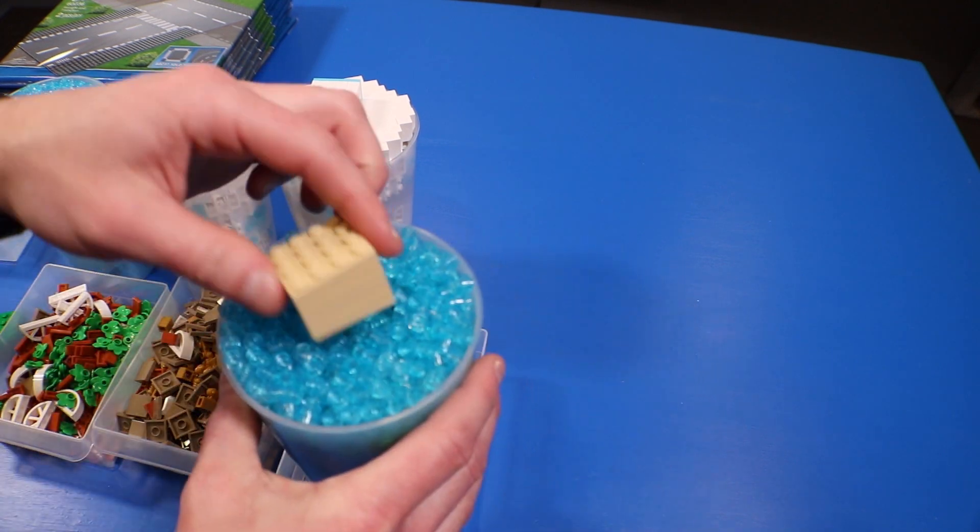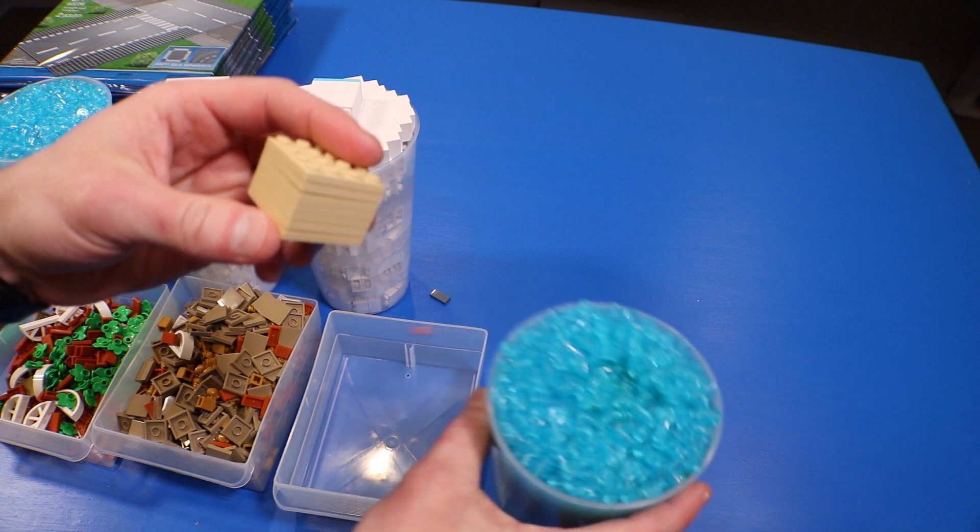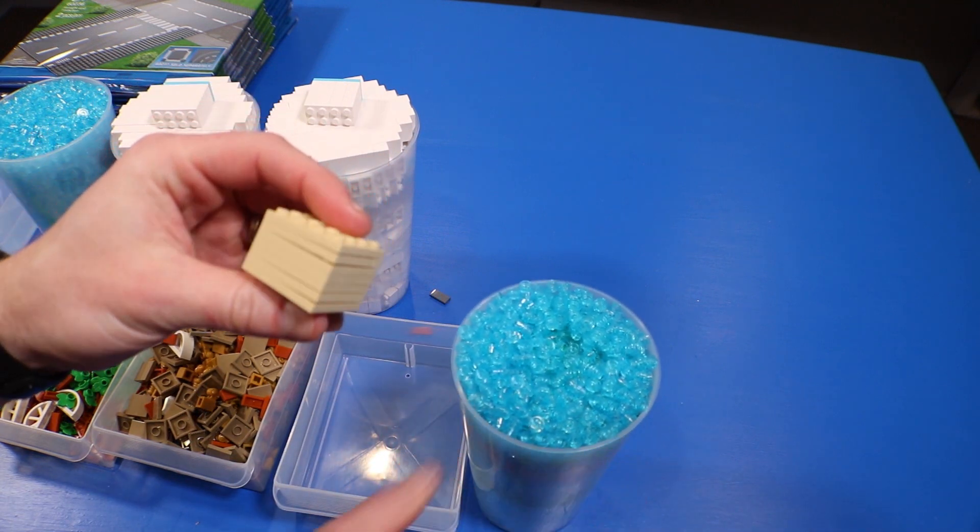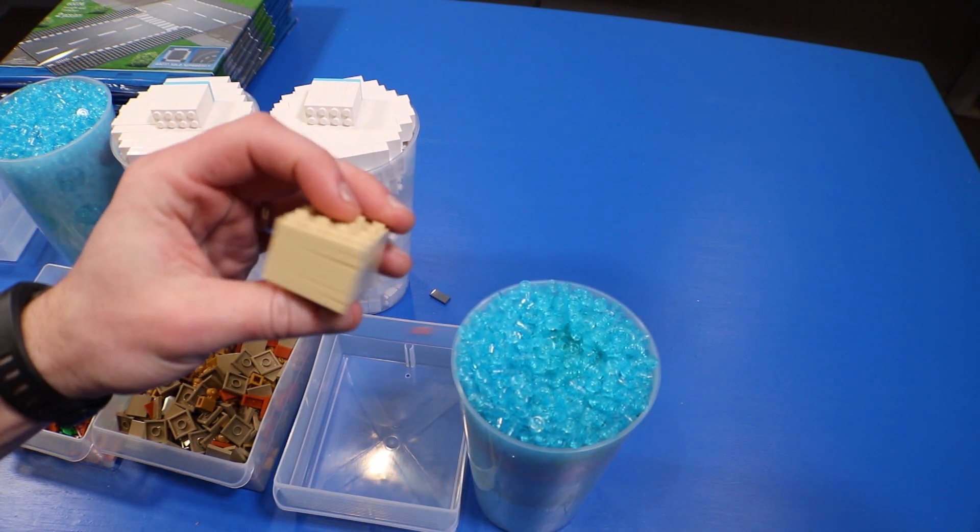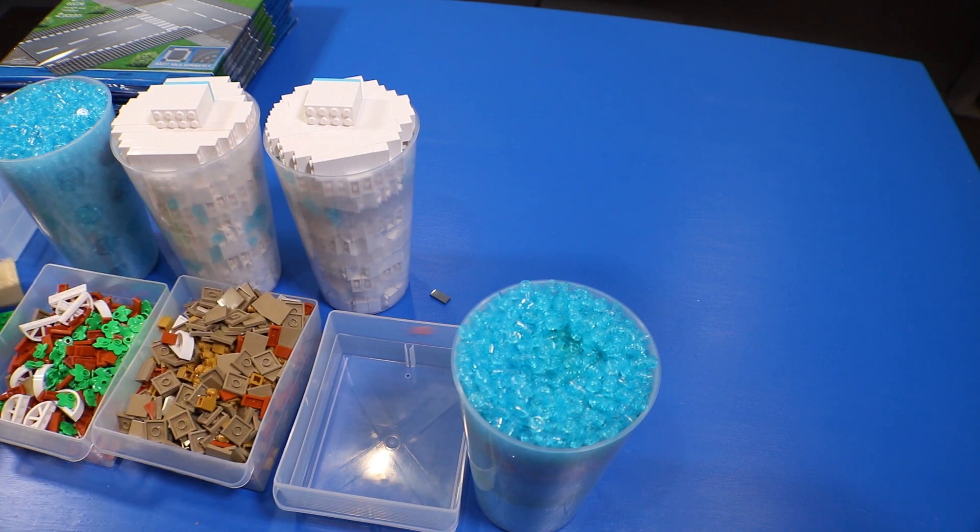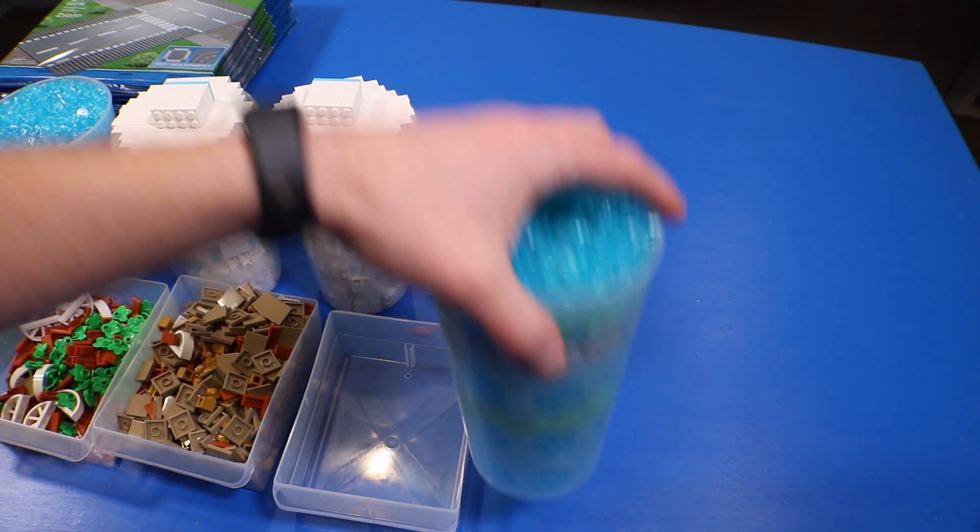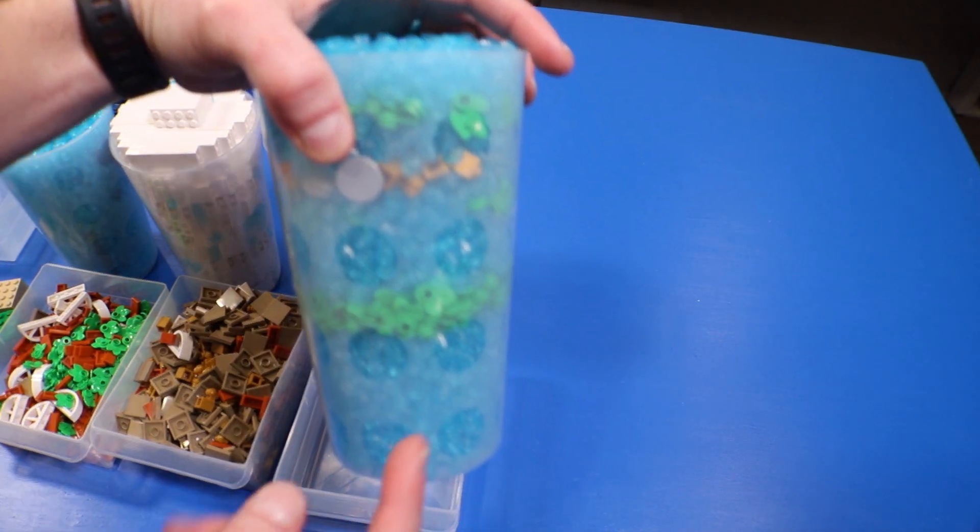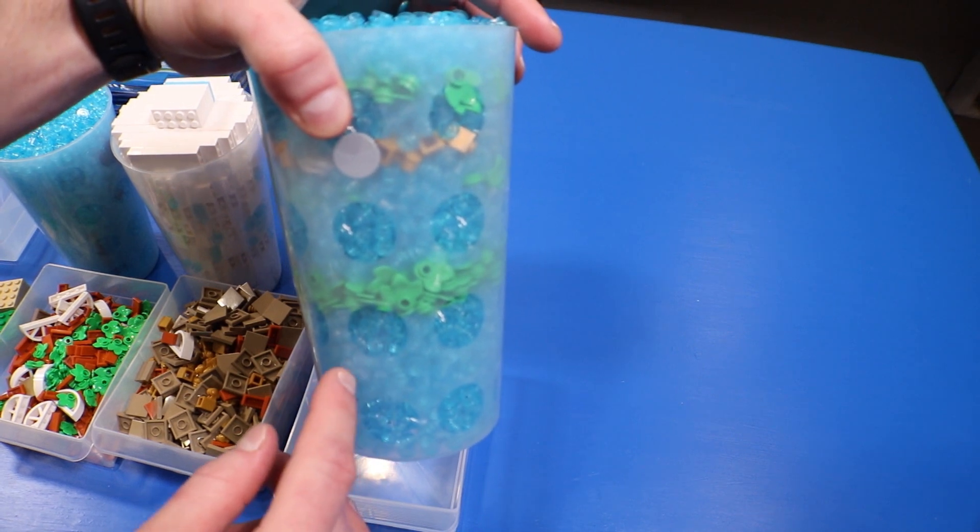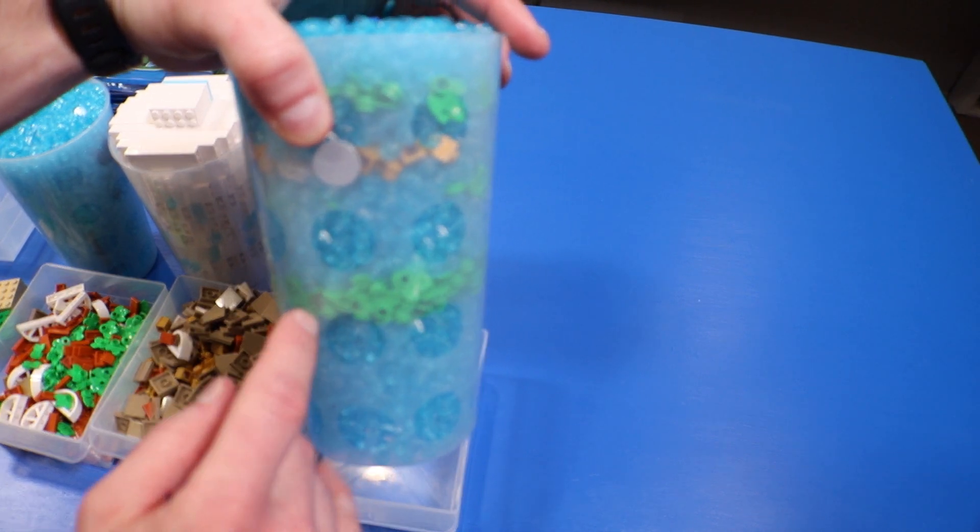All right, so last cup we've got more of the transparent blue, light transparent blue pieces. I know we kind of mixed this cup. Let's see, we got on the top - we've got some of the tan four by four plates. And then as you can see we just kind of did a couple of layers.